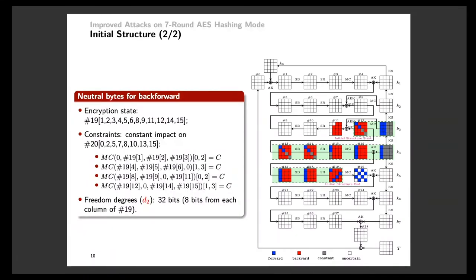The neutral bytes for backward are the red cells. They are initialized in the 12 red cells of state 19, with the constraint that after the following mixed column transformation, their impact on the blue cells of state 20 should be constant values. As a result, those blue cells of state 20 can be computed forward without any interference from the backward neutral bytes. In the end, there are 32-bit freedom degrees for the backward computation.